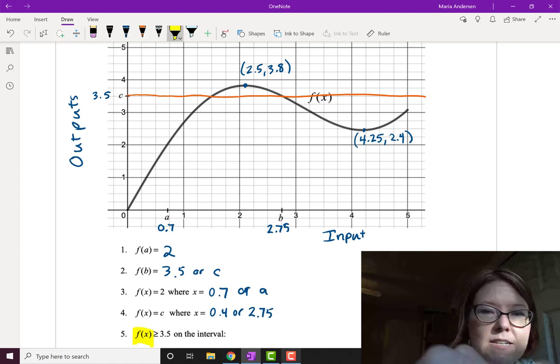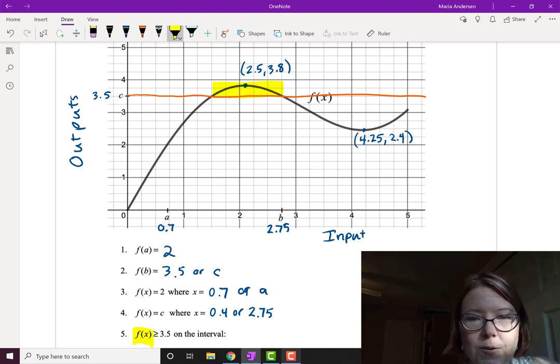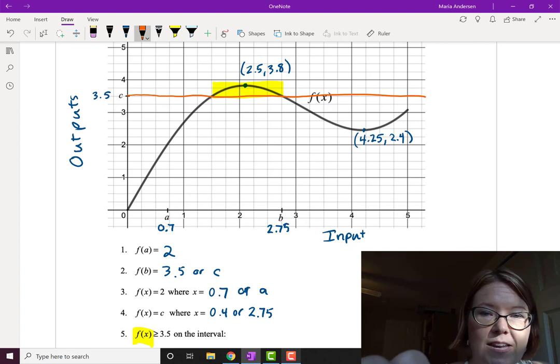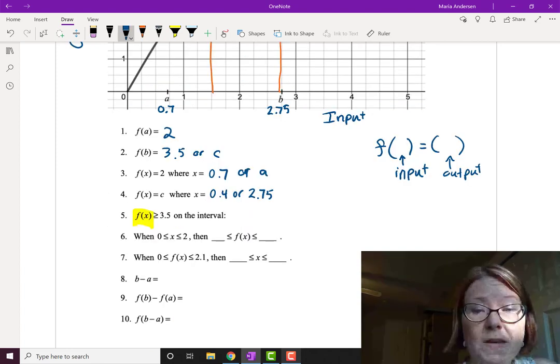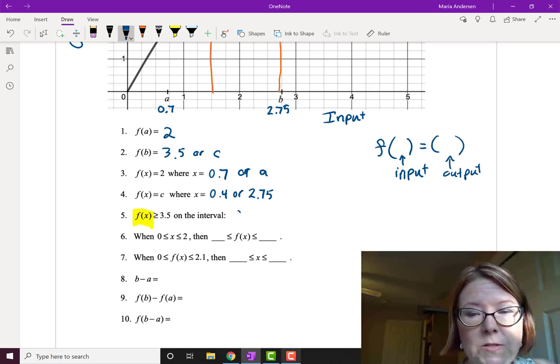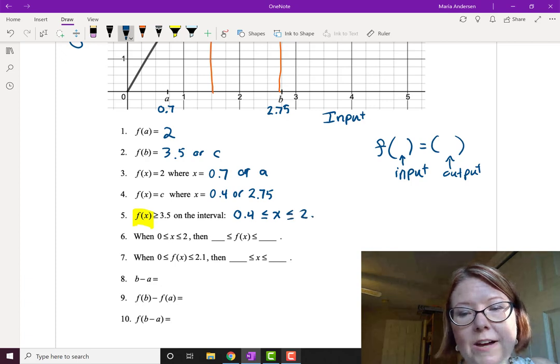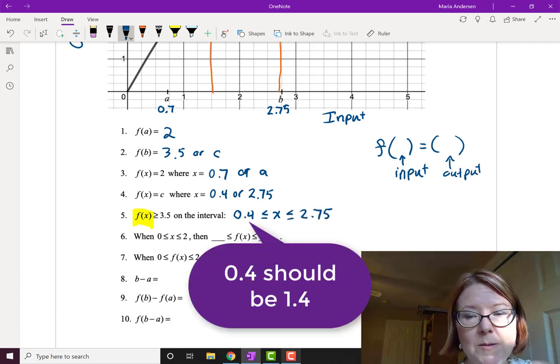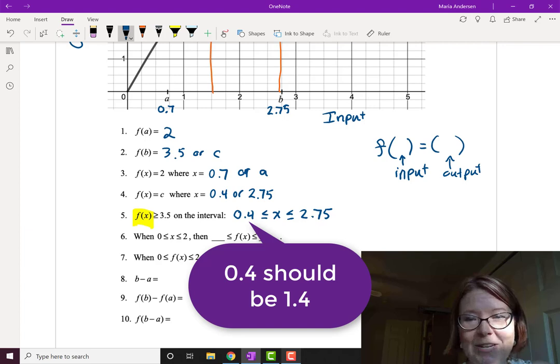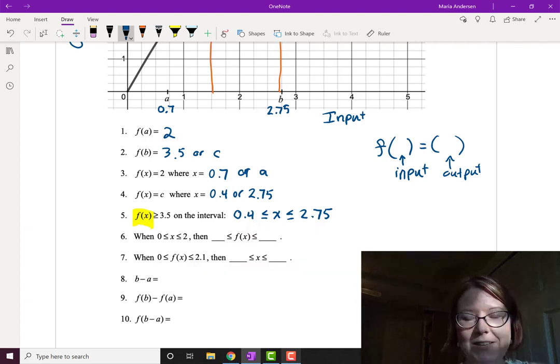And what I really want is where is the function greater than this? So the function is greater than this. I'm going to highlight it on the screen. It's greater than 3.5 between 0.4 and 2.75. If I take those values down, these are the same values we used to answer the previous question. So the interval is when x is between 0.4 and 2.75.